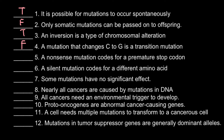A nonsense mutation codes for a premature stop codon — and this is true. We have 3 stop codons out of a total of 64 codons. Many different point mutations may cause codons that code for an amino acid to become a stop codon. This leads to production of a shorter version of the protein, which is usually non-functional.